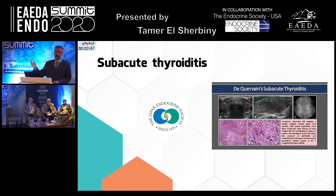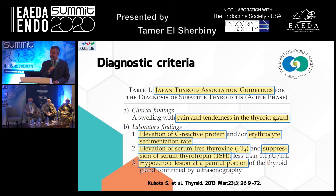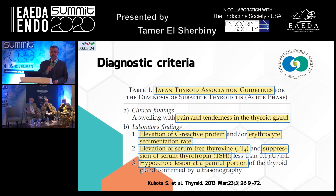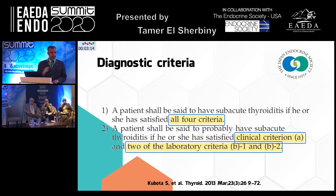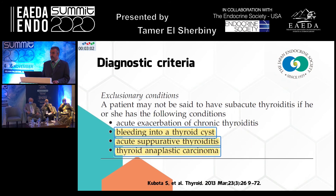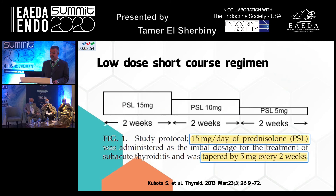The diagnostic criteria for subacute thyroiditis include: pain or tenderness in the thyroid, elevated CRP or elevated ESR, thyrotoxicosis (high T3/T4 and suppressed TSH), and ultrasound showing hypoechogenicity corresponding to the area of pain. If all four criteria are met, the patient is diagnosed with subacute thyroiditis. If the patient meets the clinical criteria and any two of the lab or imaging criteria, subacute thyroiditis is probable. You must exclude bleeding in a thyroid cyst, acute suppurative thyroiditis, and anaplastic carcinoma.